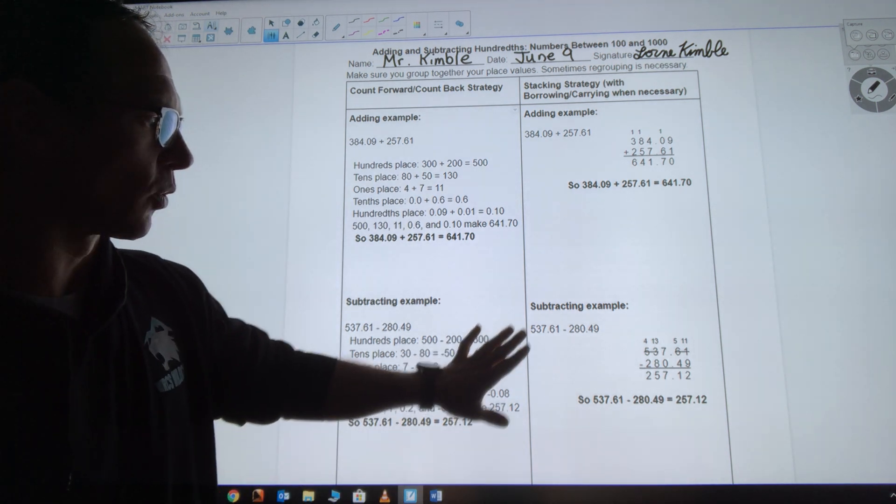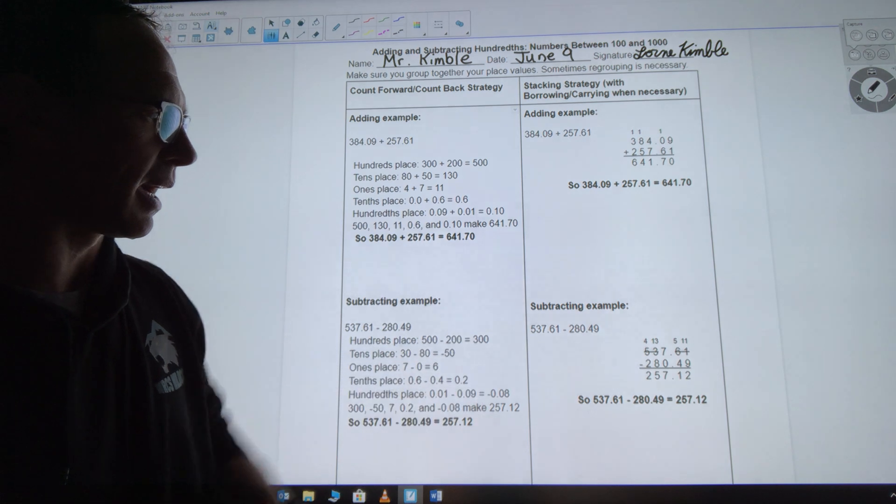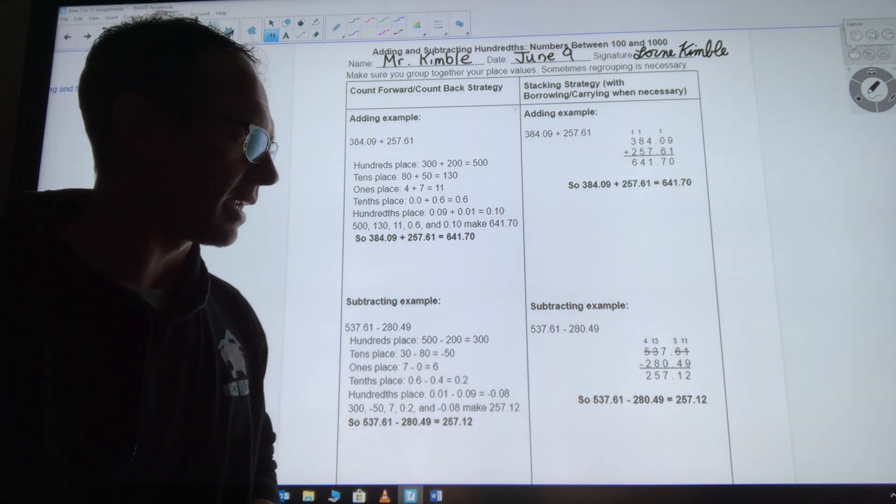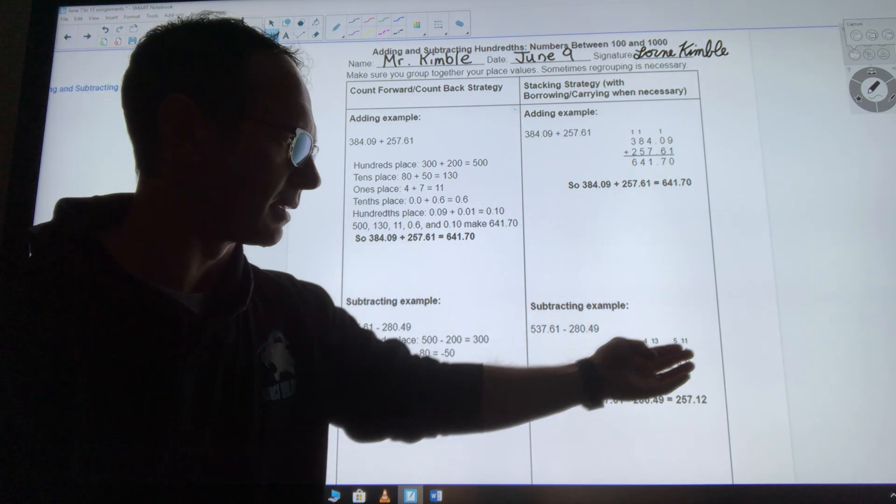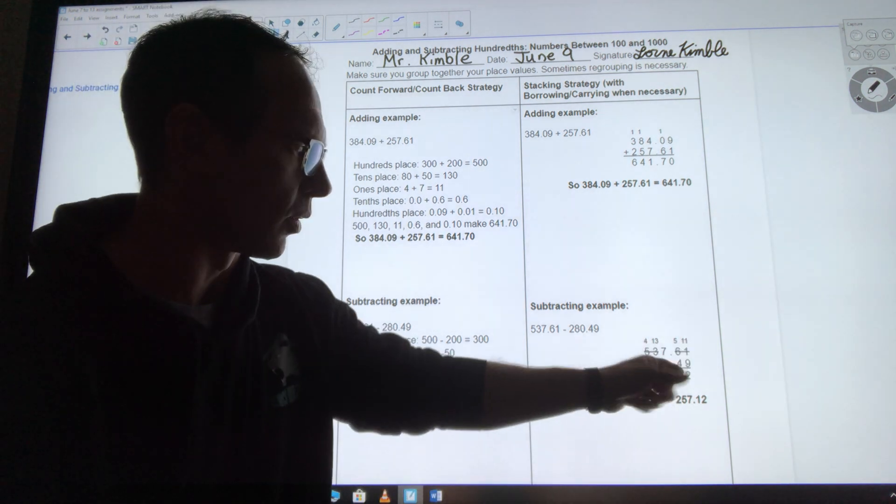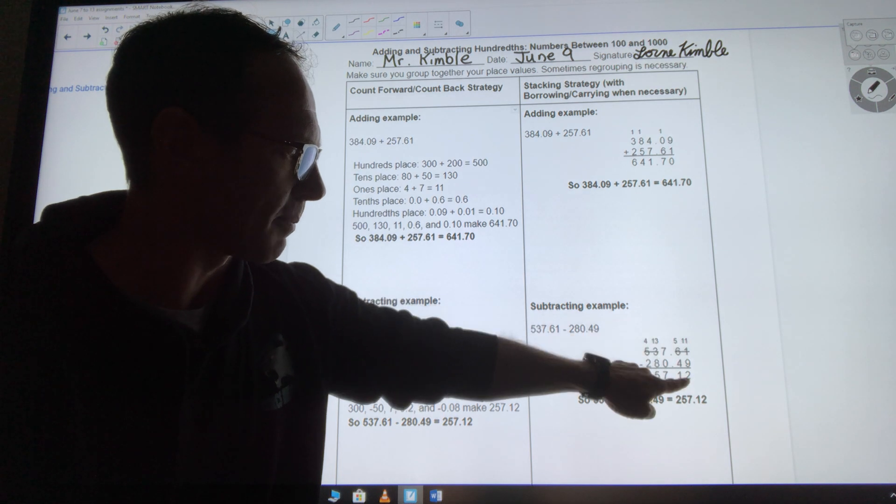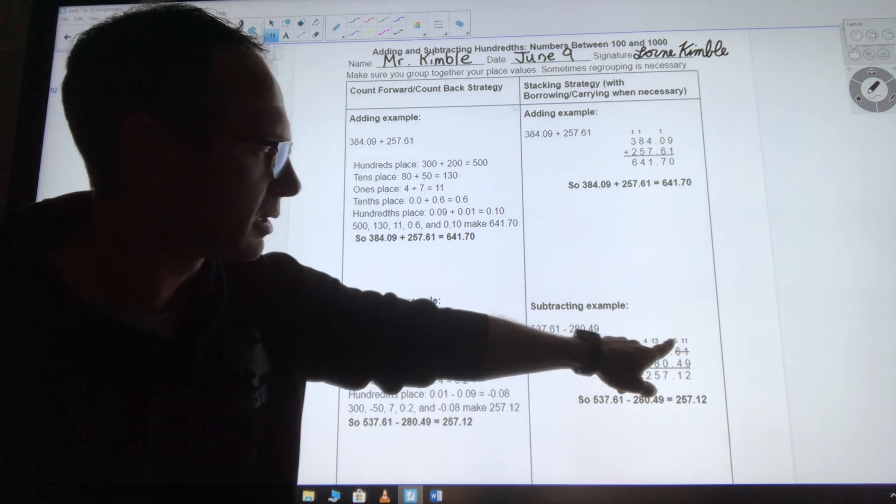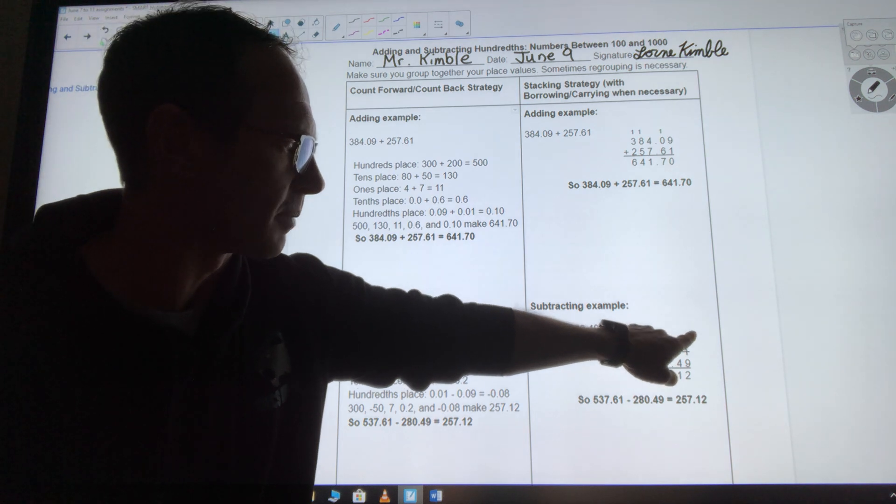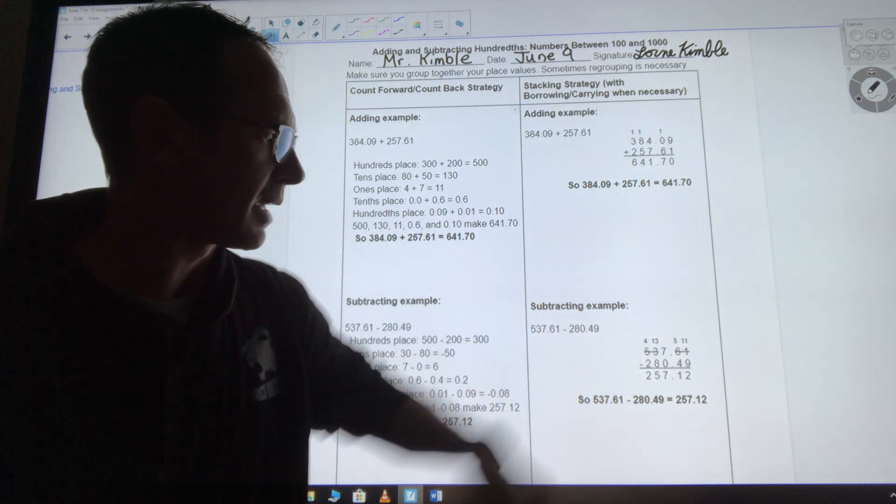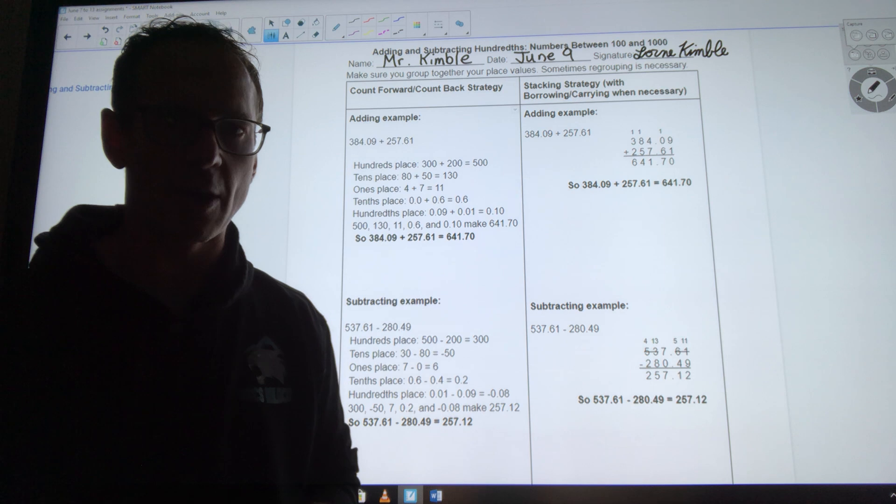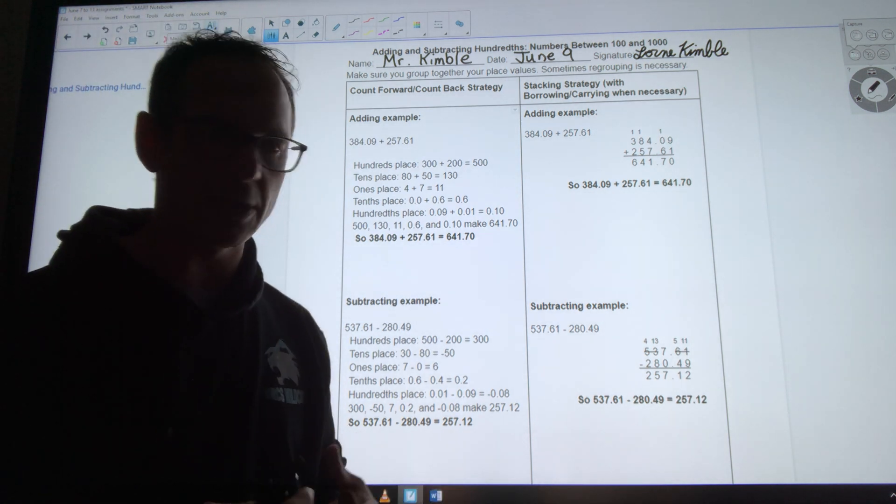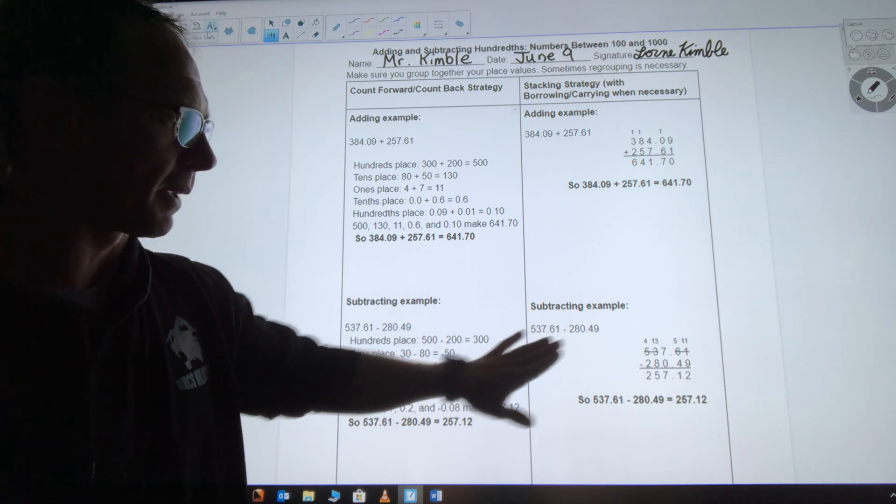I do find for when I'm going to be having to do some borrowing, I do like to stack them. And if I'm in need of regrouping, then I can borrow. So for example, here where it says 1 minus 9 in the hundreds place, I just borrow 1 from the tenths and this becomes 11 in the hundreds place. Now I have 11 minus 9. I do find it to be a little easier to deal with when you're dealing with complicated numbers.